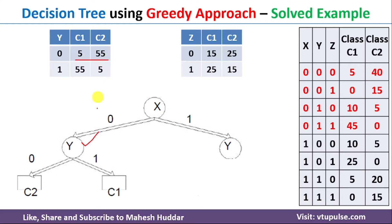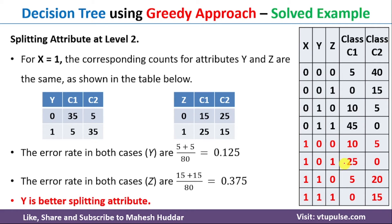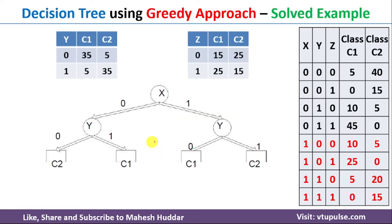With Y as the node, there are two possibilities: Y equal to 0 and Y equal to 1. For Y equal to 0, the maximum between these two is 55, which corresponds to C2 — meaning 5 is the error and 55 is the correct classification. For Y equal to 1, the maximum is C1, so I have written C1 at this point. Now moving to the right side, when X equal to 1, we consider the remaining four examples. Calculating the error rate: error for Y is 0.125 and error for Z is 0.375. Between these two, Y is the minimum, so we consider Y as the best splitting node on the right-hand side as well.